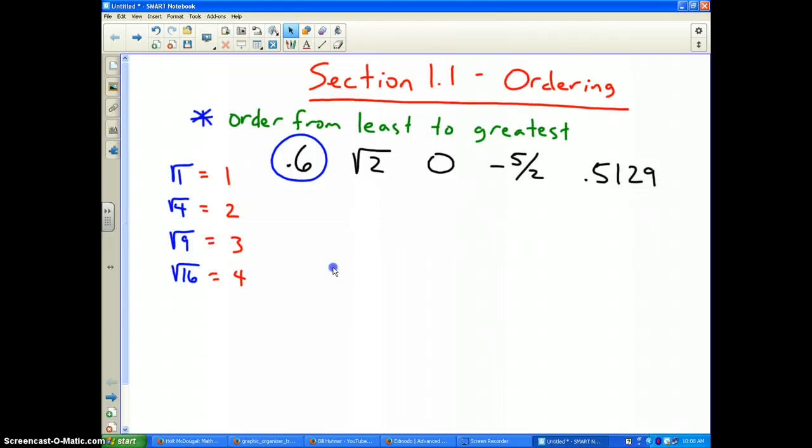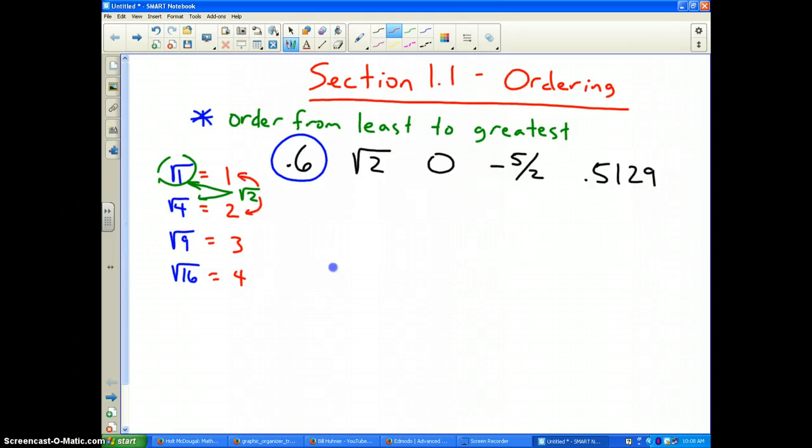What two perfect square roots does the square root of two fall between? The square root of two falls between these two, and I notice it's closer to the square root of one. Two is closer to one than it is to four. Therefore, my approximation for the square root of two must be closer to one than to two, so approximately 1.4, maybe just less than halfway because two is not quite halfway between one and four. I'm going to rewrite the square root of two as about 1.4.